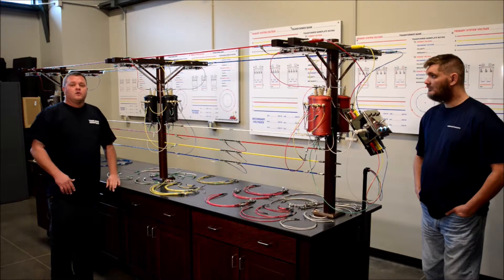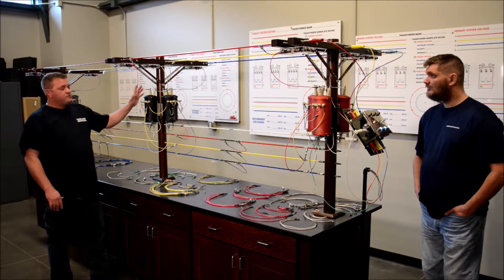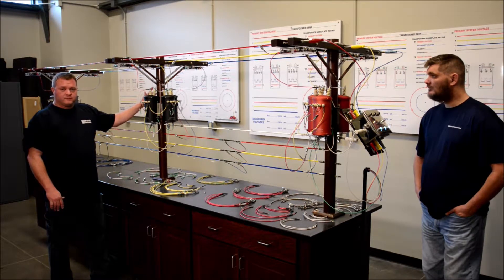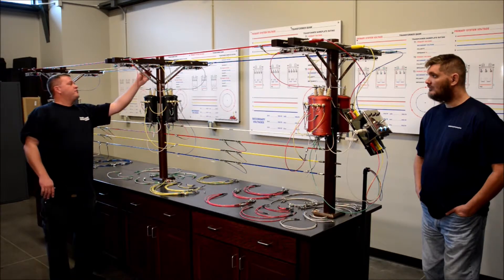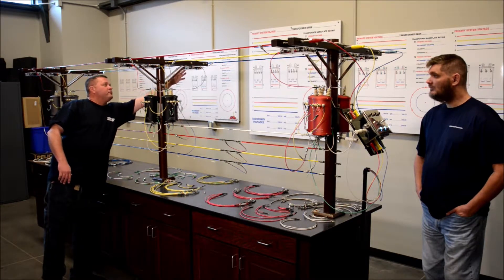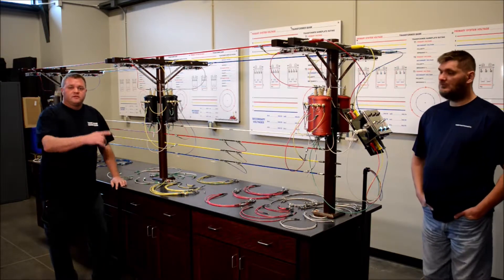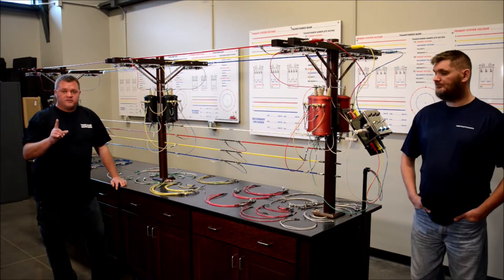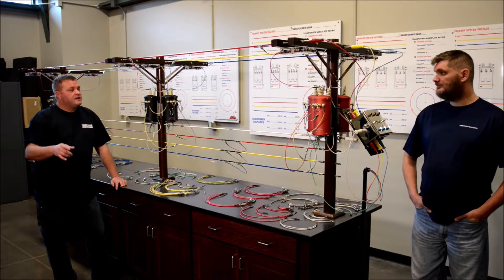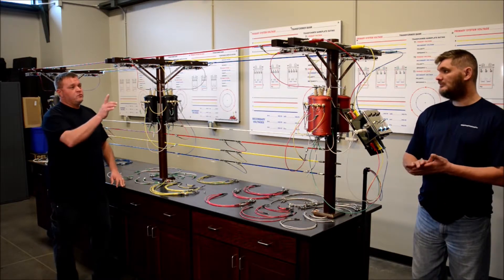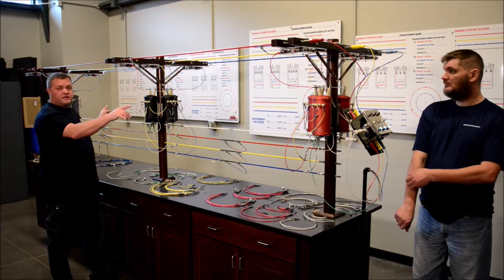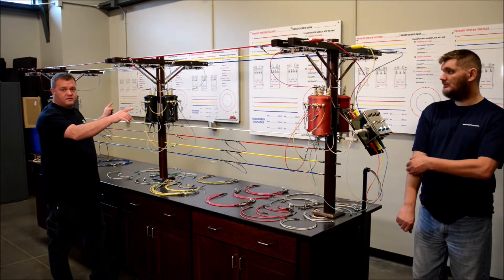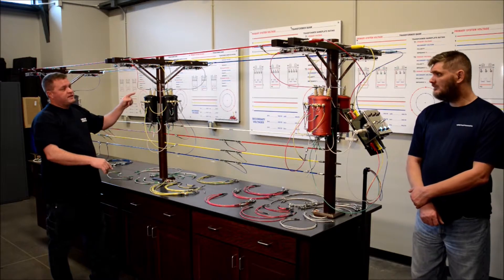So in this demonstration, what we're going to do is I have got this bank completely built, ready to go. All the cut outs are closed, or the breakers. Jason is going to energize one phase on this primary system. And I want you to watch every one of the lights come on the system. Now on the other two banks, the green lights are going to come on. Those banks are not closed, just this bank.